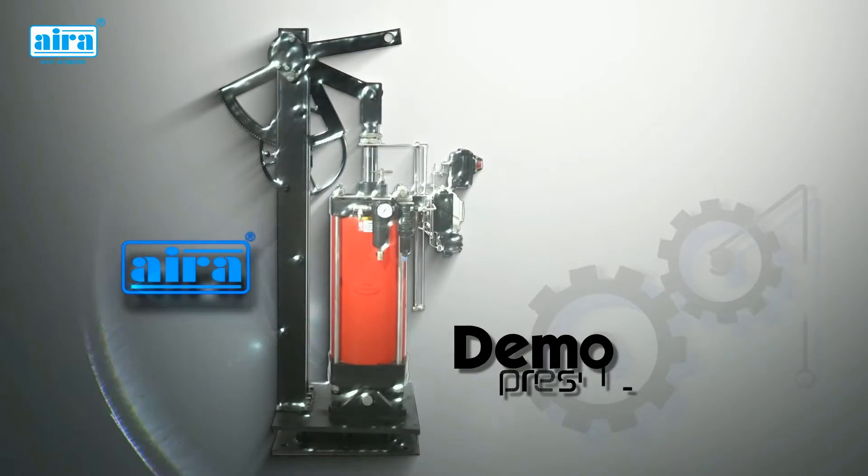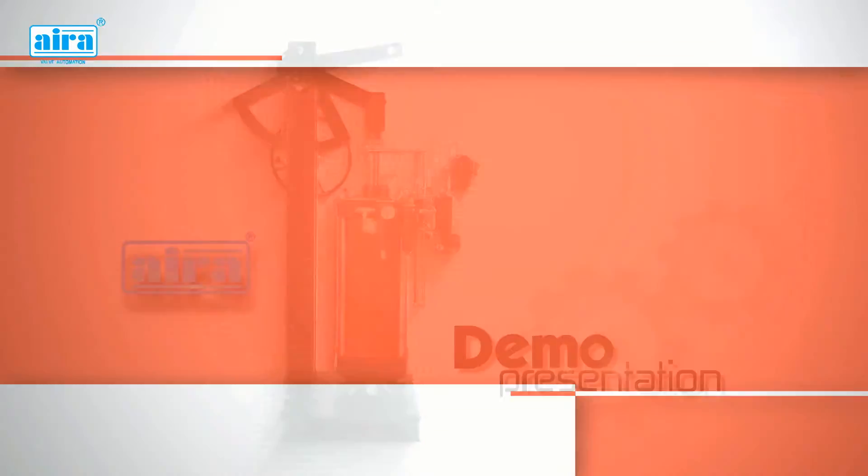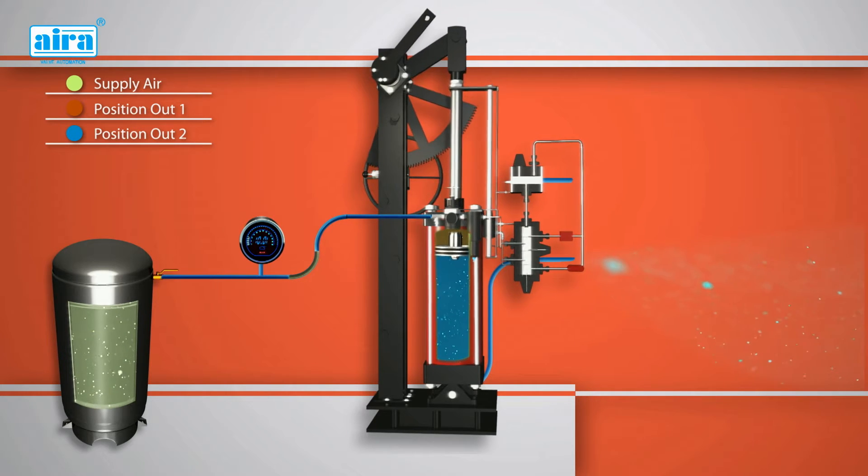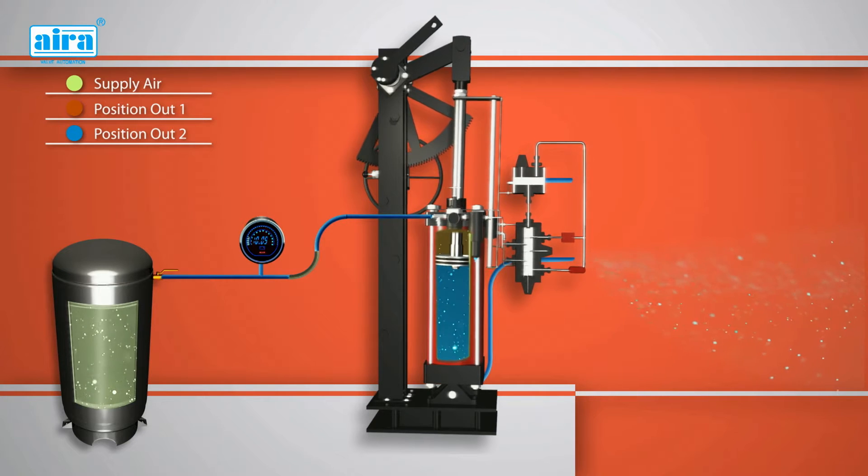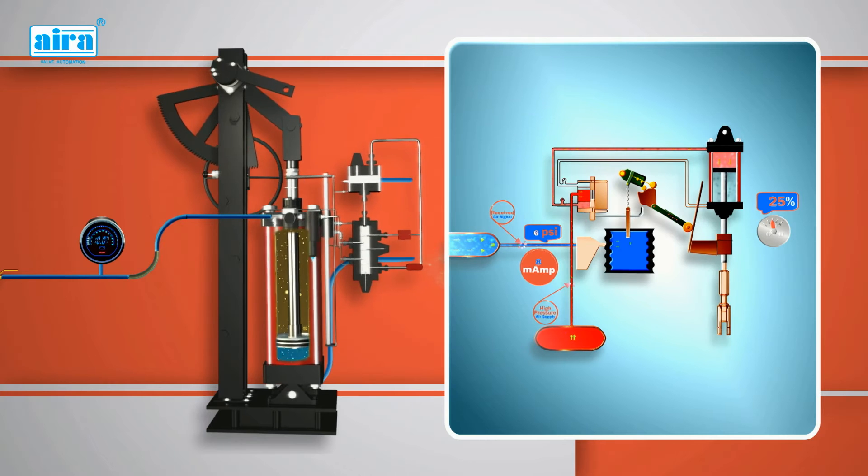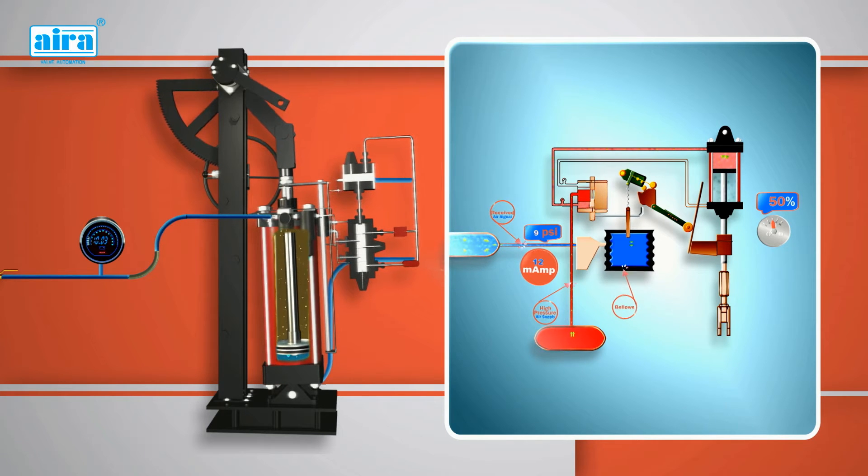Let's see how a power cylinder works. The position control unit incorporated in the power cylinder receives air signal from a controller and regulates the high pressure air supply to the cylinder to give a corresponding displacement of the piston. The position control unit operates on the force balance principle and comprises a bellows to receive the control signal,